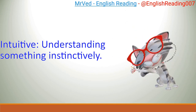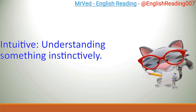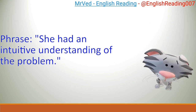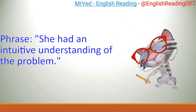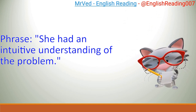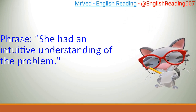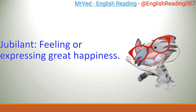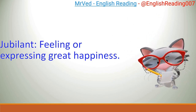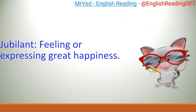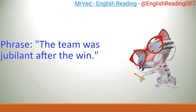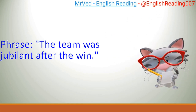Intuitive: understanding something instinctively. Example: She had an intuitive understanding of the problem. Jubilant: feeling or expressing great happiness. Example: The team was jubilant after the win.